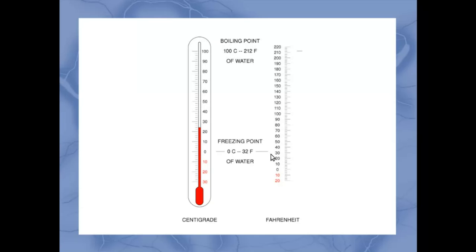Now, because of both the offset on the zero point and the fact that we've got different sizes of degrees, by the time we get up to the boiling point of water, our two temperatures are very much different from each other.